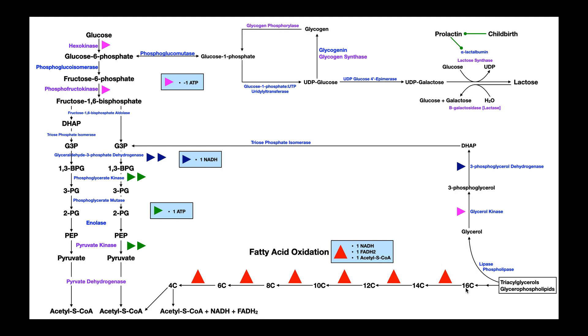So remember that beta-oxidation takes a fatty acid of some number of carbons, let's say 16 right here, and with each round of beta-oxidation it removes two carbons as acetyl-CoA, and it also generates NADH and FADH2. So here's 16 carbons. We do one round of beta-oxidation. We clip off two carbons as acetyl-CoA and get NADH and FADH2, and now we're down to 14 carbons.